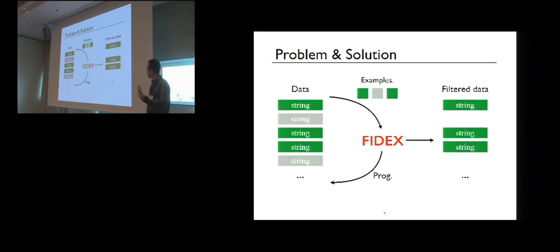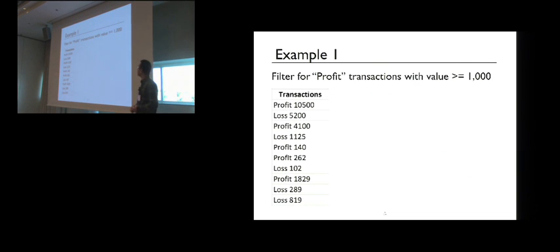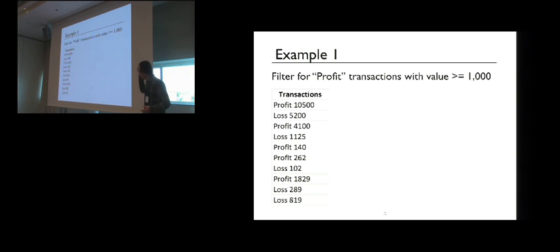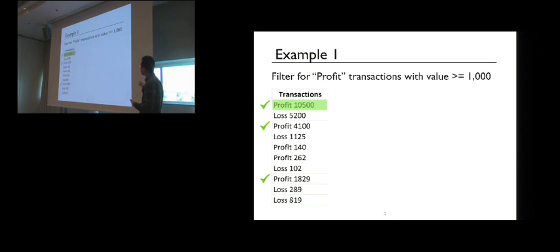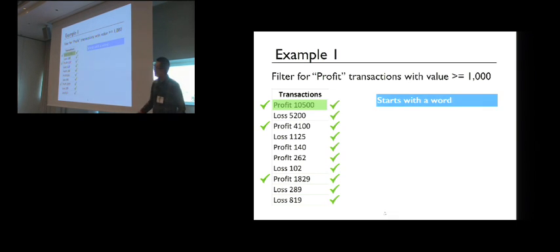Before moving to the technical discussion, I'll present some examples to illustrate how our system works. In this example, the user wants to filter for profit transactions with a value greater than or equal to 1,000. The user has a small column of strings and wants to select only three of them. By giving examples, our system takes the first positive example and learns a program that looks for strings starting with a word.